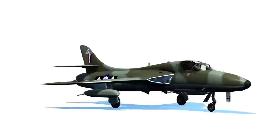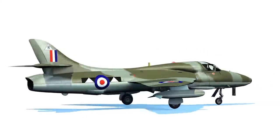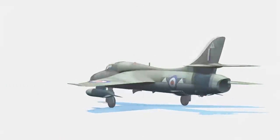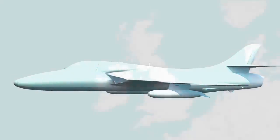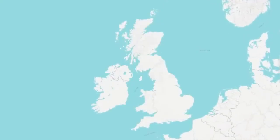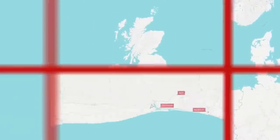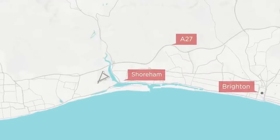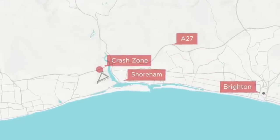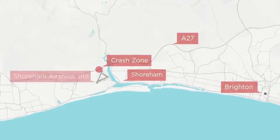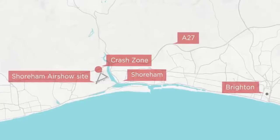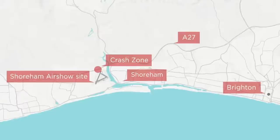The Hawker Hunter T7 is a single-engine, swept-wing military jet trainer capable of flight close to the speed of sound. At 1:22 in the afternoon on 22 August 2015, the aircraft crashed onto the A27 Shoreham bypass while performing at a nearby flying display, fatally injuring 11 road users and bystanders.